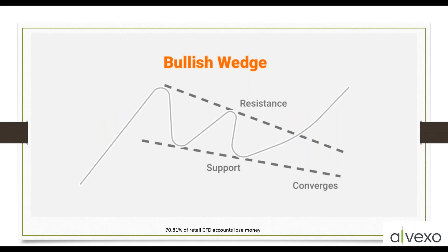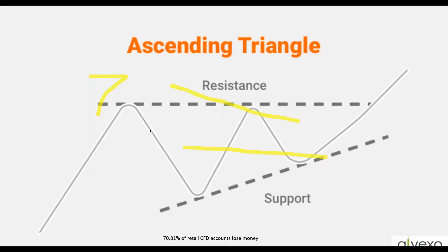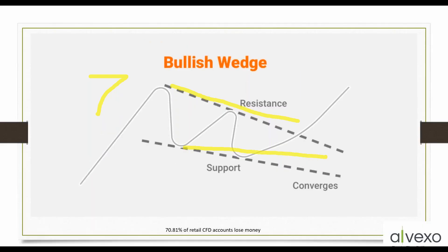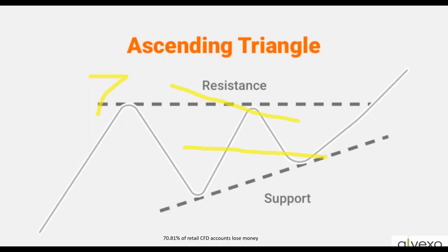Now here come some of my favorites — wedges. A wedge to me is the same as a triangle. The difference is that triangles have lines converging at the same degrees, while wedges have a top and bottom support/resistance converging at different degrees. Then there's the ascending triangle — one pointing up, one pointing down. People will tell you an ascending triangle means price will break out upwards, but you only know which direction price is going when it actually breaks out. We wait for the breakout: if it breaks down we do one thing, if it breaks up we do the exact opposite.